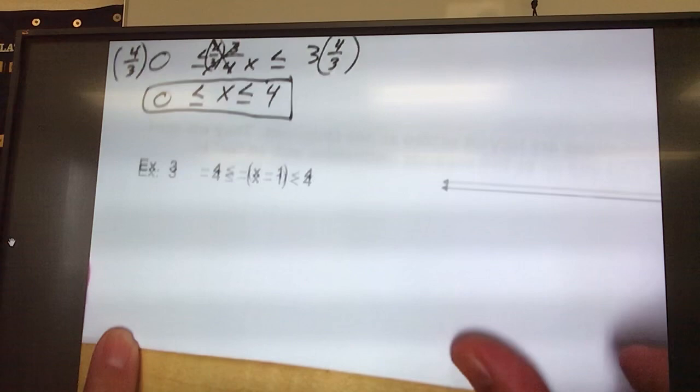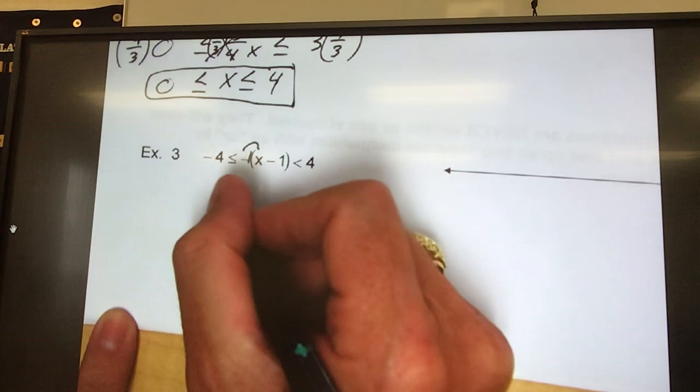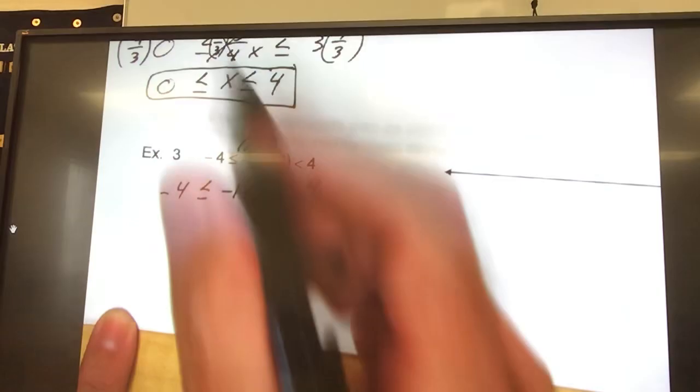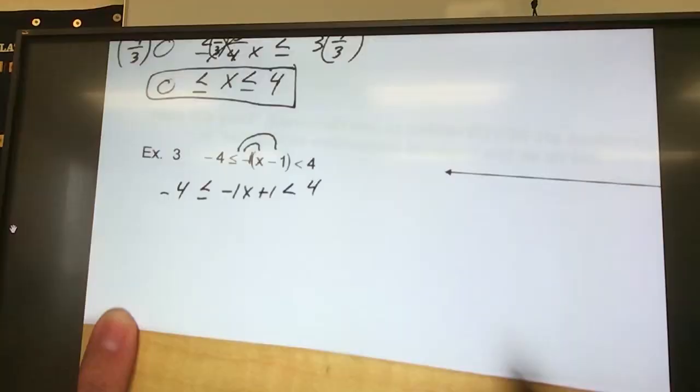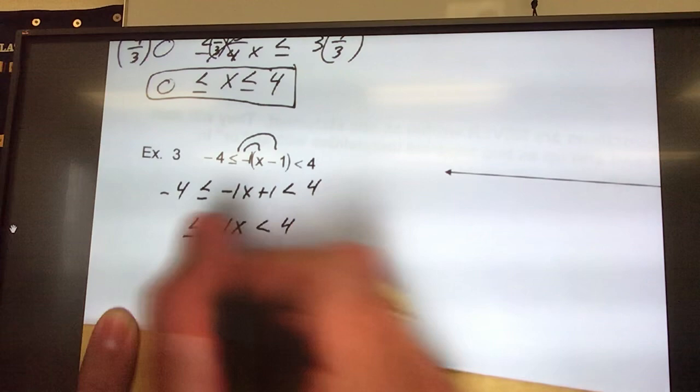Moving on to number 3. On number 3, I have a negative outside parentheses. So, I have to distribute that. I go ahead and like to put a 1 there. So, it's negative 1 distributed through. So, negative 1 times x is negative 1x. Negative 1 times negative 1 is a positive 1. Now, I bring down my signs, bring down my ends. And, I'm right back to where I was on 1 and 2 to start. So, I find my x is in the middle. So, I go ahead and write it down. Negative 1x. Bring down my bridges.